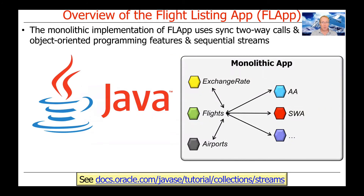The first version of FLAP uses synchronous two-way calls and good old-fashioned object-oriented programming features, with a splash of Java sequential streams. This is not meant to be a scalable production system — it's just meant to illustrate running examples. In a monolithic app, you've got a bunch of service components that all run in the same address space, designated by this single process with a bunch of components in it.